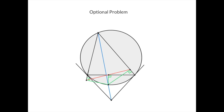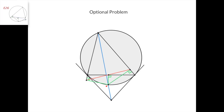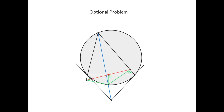Here's the optional problem. We have a triangle. The blue line is its symmedian with respect to this vertex, and let the symmedian intersect the circumcircle of the triangle at this point. Take the Simson line of this point with respect to this triangle — that would be this line, where this angle is 90 degrees, this angle is 90 degrees, and this angle is 90 degrees.